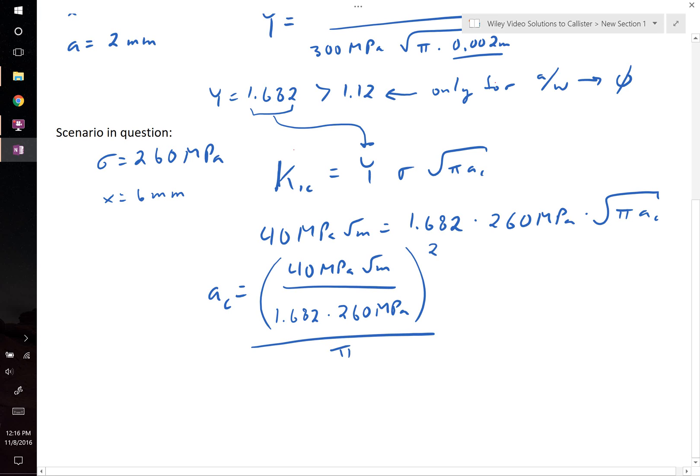When we take the result of this, we find that it is equal to 0.00227 meters. Or, in other words, our critical crack length, ac, is equal to 2.27 mm.